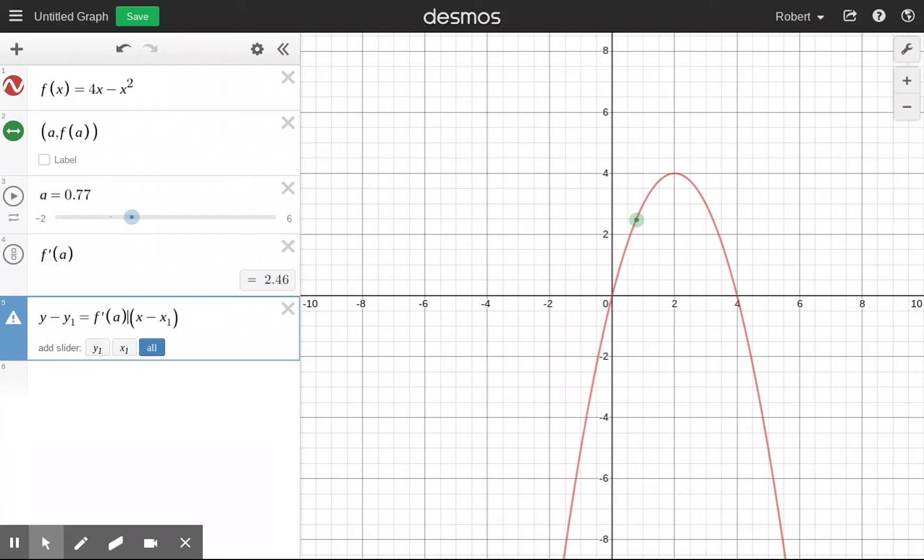Now I already know that the slope is supposed to be f prime of a. So I'm going to put f prime of a right here. And I actually know what the coordinates of my point are going to be. The x coordinate was a and the y coordinate is f of a. You can see that up here in the second cell. So if I put in this formula, what I'm going to get is the equation of the tangent line. And not only the equation of the tangent line, I see the tangent line is now being plotted over in Desmos.